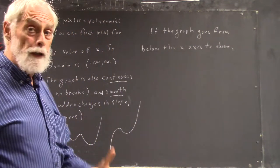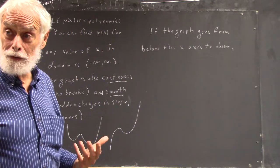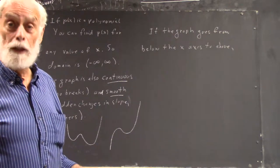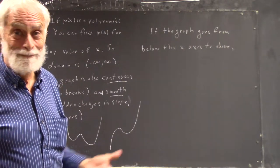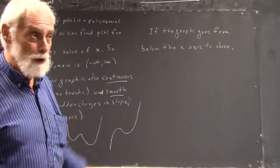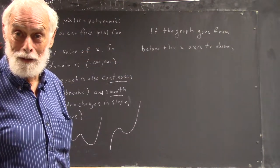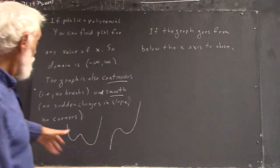If the graph goes from below the x-axis to above the x-axis, it goes through the x-axis. In other words, you can't get from below to above without going through the x-axis. It's because of the continuity.